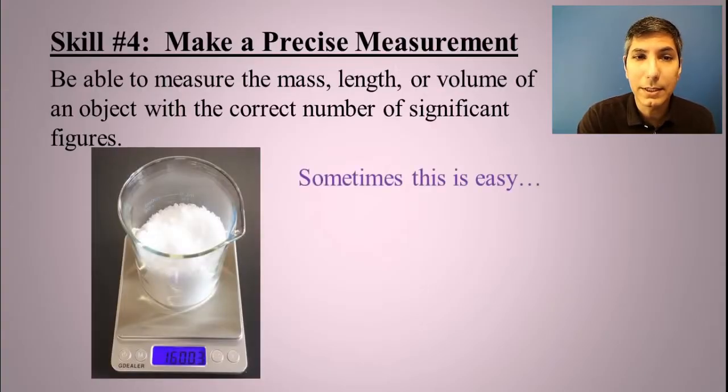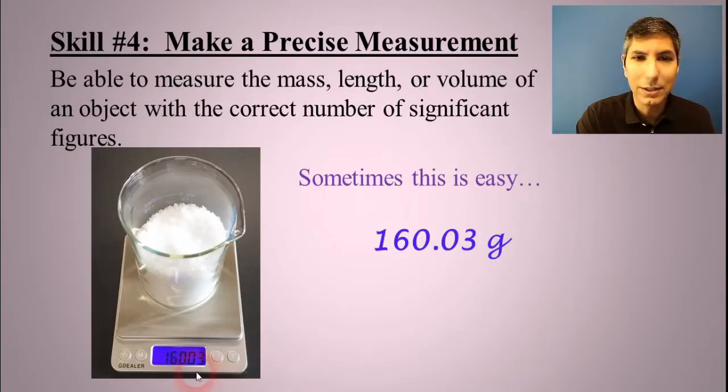Now sometimes this is easy. If you have a scale and you're putting something on there, some sort of electronic balance, it gives you a readout and you just write down what it says, 160.03 grams in this case, and that has the appropriate number of significant figures.